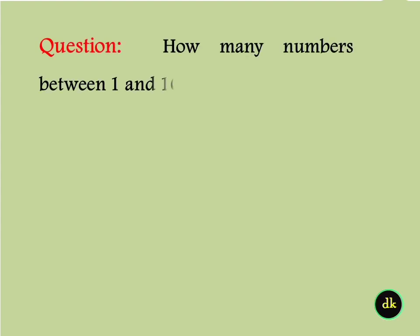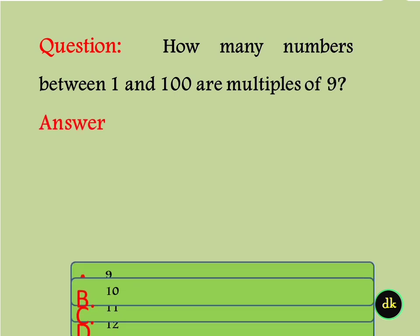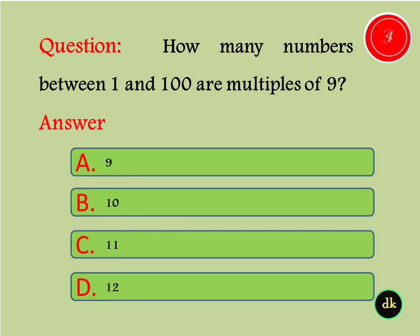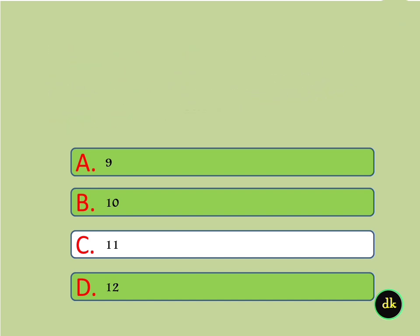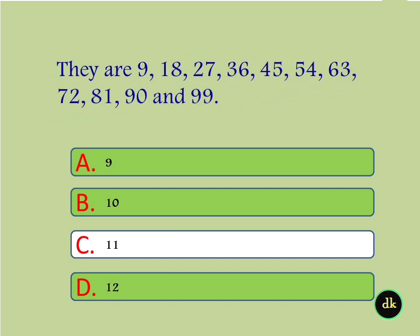How many numbers between 1 and 100 are multiples of 9? Answer: 11. The numbers are 9, 18, 27, 36, 45, 54, 63, 72, 81, 90, and 99.